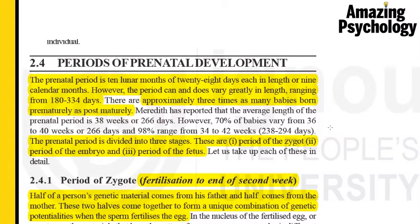I'm on page 23 of the course book. The prenatal period is typically 10 lunar months or 280 days, because each moon phase lasts for 28 days. When you consider calendar months, you can say it's nine calendar months long, but the time period varies from person to person — it can range from 180 days to 334 days.